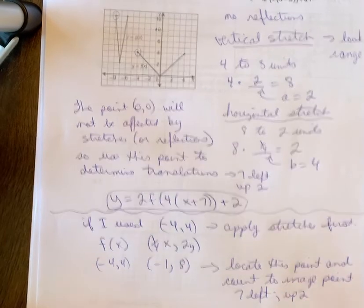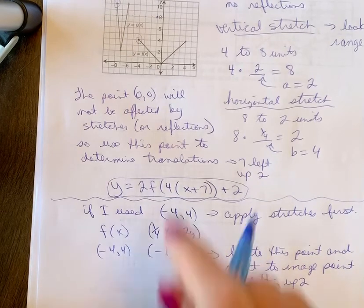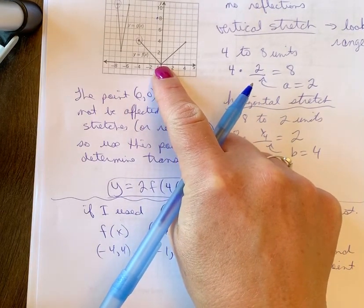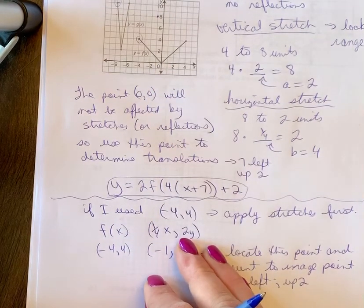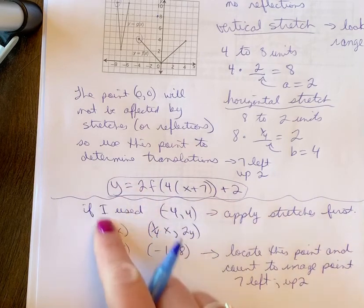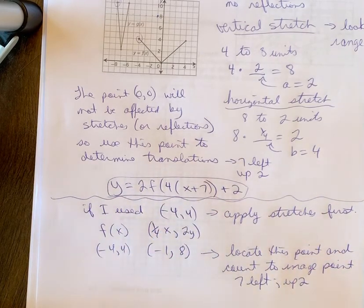Now, if I want to avoid doing all this extra work, I choose the point 0, 0. If there is not a point 0, 0, then I have to go through this process and I would want to see that thought process. We would justify our work so you are demonstrating that you know the stretches have to be applied before the translations.